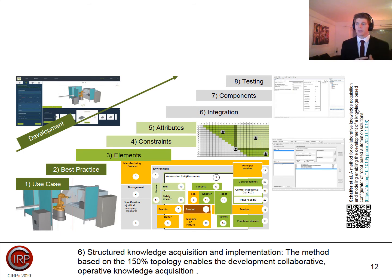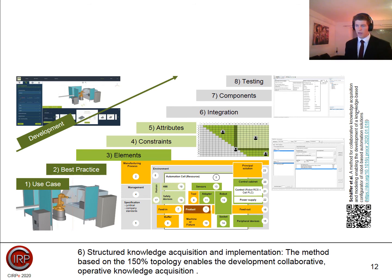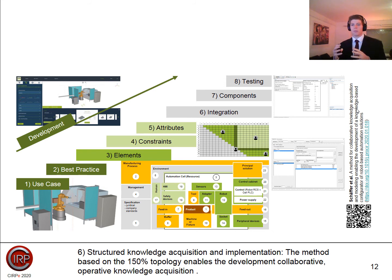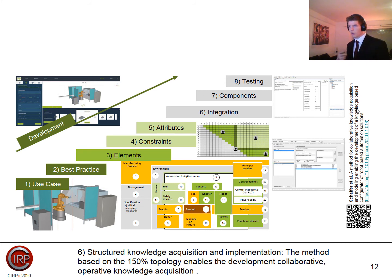For the collection process, we published last year at SERP-E a paper which describes this process in more detail. In summary: you start with a use case — such as machine tending — then you acquire best practices. Out of these best practices, you collect the elements, the 150% topology, identifying what kind of components are within. These components are used to collect constraints, because every component or element has conditions relating to other elements, which structures the knowledge acquisition.